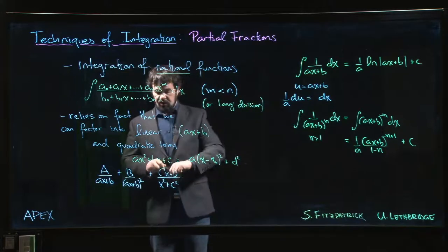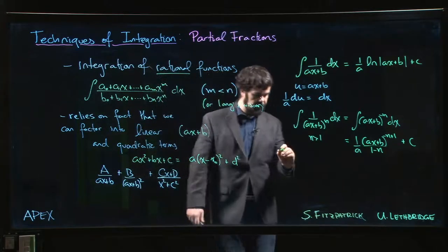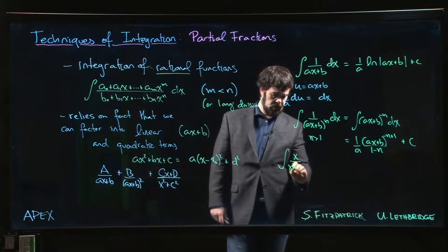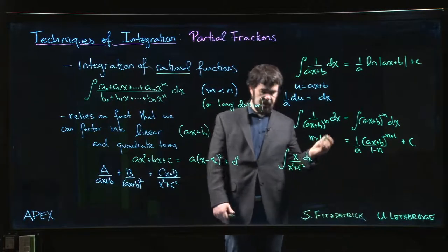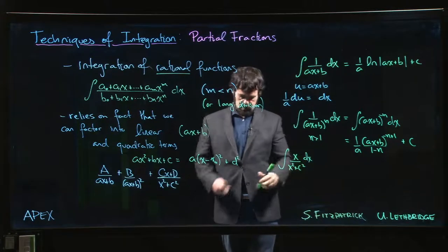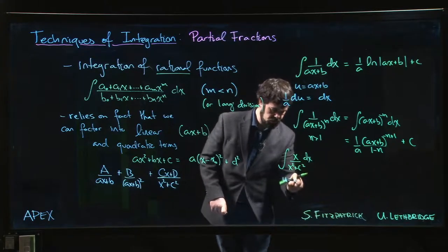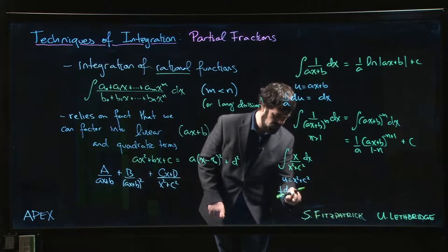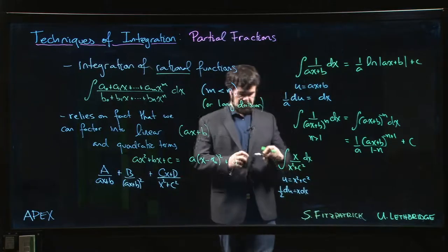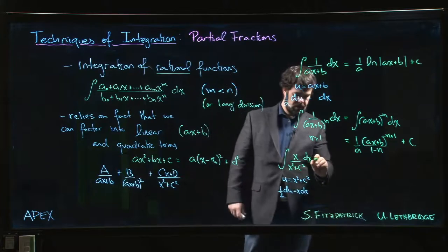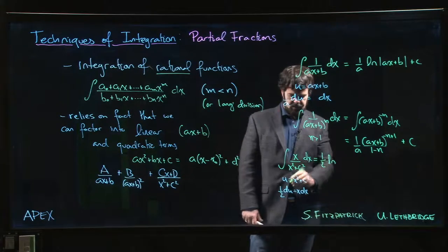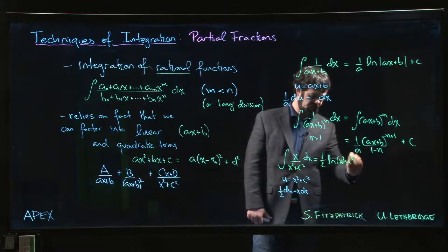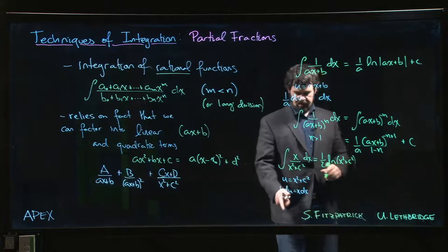If we have something like this, there's two possible terms. If I have something that looks like x over (x² + c²), again we can do a u substitution. Let u equal x² + c², then 1/2 du is equal to x dx, and we get 1/2 natural log of x² + c².